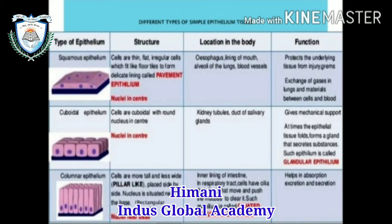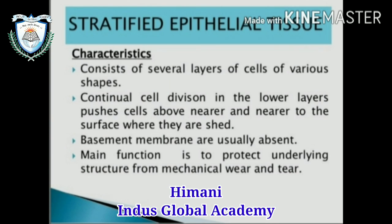Third is columnar epithelium. Structure: cells are more tall than wide, with a pillar-like structure placed side by side, and the nucleus is situated near the base. It is also found in a rectangular shape. Location: inner lining of the intestine and respiratory tract. It is also found in the form of cilia, and is then known as ciliated columnar epithelium. Function: helps in absorption, excretion, and secretion.